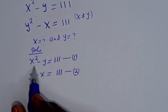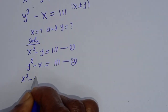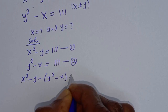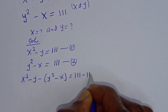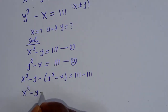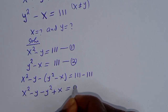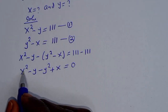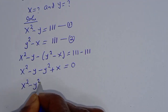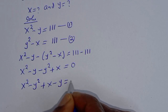We can subtract equation 1 from equation 2: (x squared minus y) minus (y squared minus x) is equal to 111 minus 111. This simplifies to x squared minus y squared plus x minus y is equal to 0.